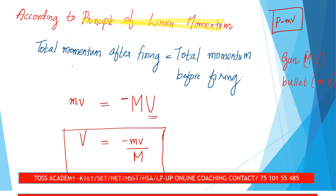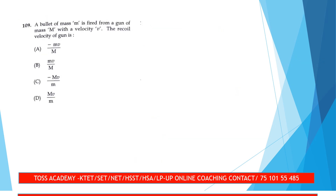Now for the first question: a bullet of mass m is fired from a gun of mass capital M with a velocity V. What is the recoil velocity of the gun? The right answer is option A: minus mV by capital M. That is, the recoil velocity = −mv/M.